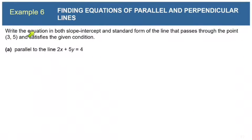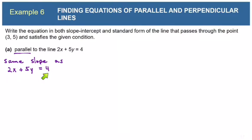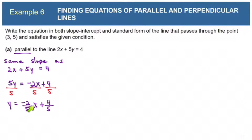In example 6, we're going to write the equation in slope-intercept form and standard form of a line that passes through the point (3, 5) and is parallel to 2x plus 5y equals 4. To write the equation of a line, we need a point and a slope. Since parallel lines have the same slope, we find this line's slope by solving for y, moving 2x to the right and dividing by 5. We get y equals negative 2/5 x plus 4/5, so the slope is negative 2/5, and our new line will also have slope negative 2/5.